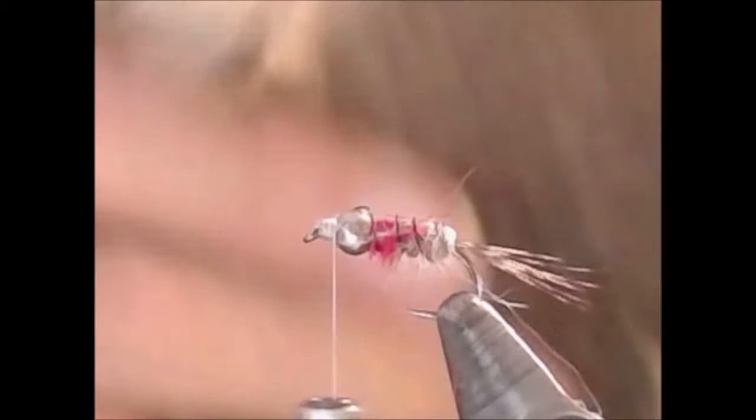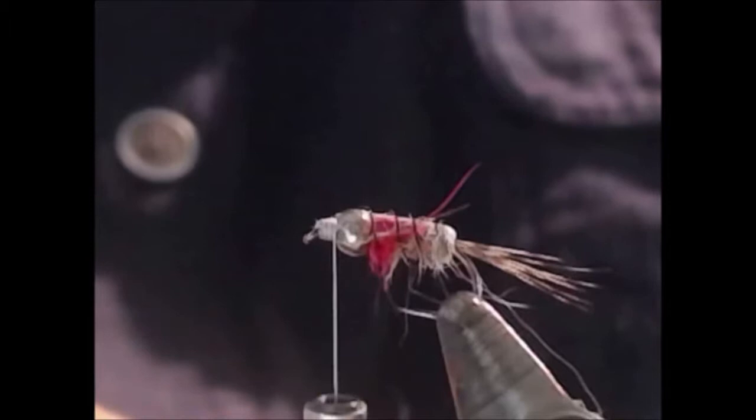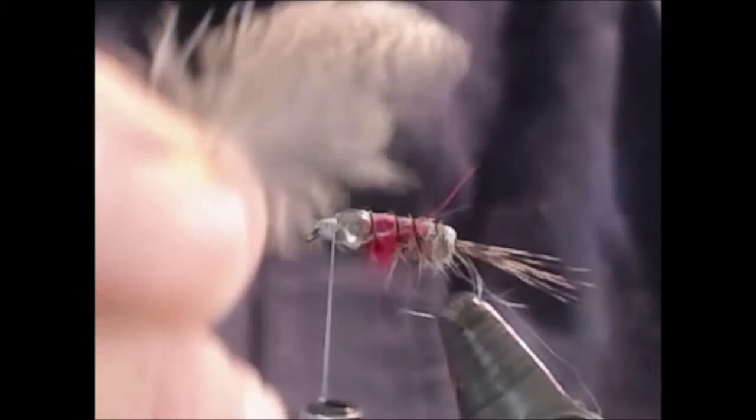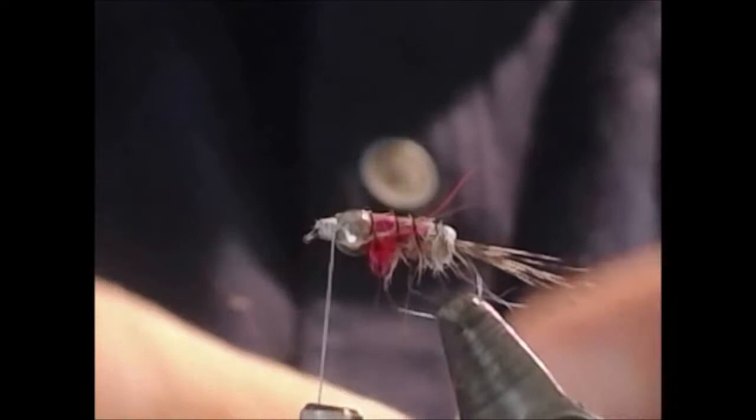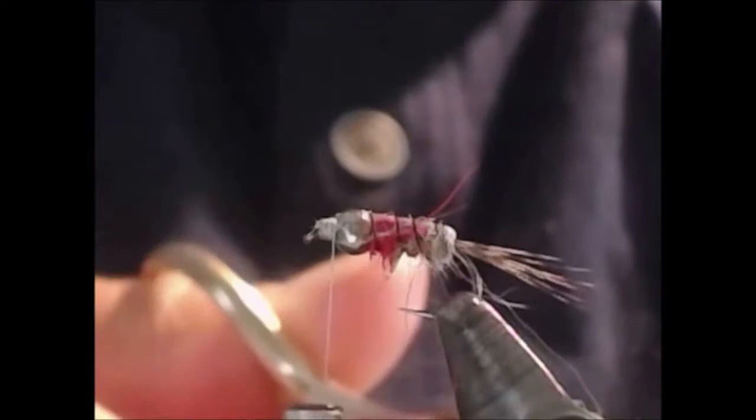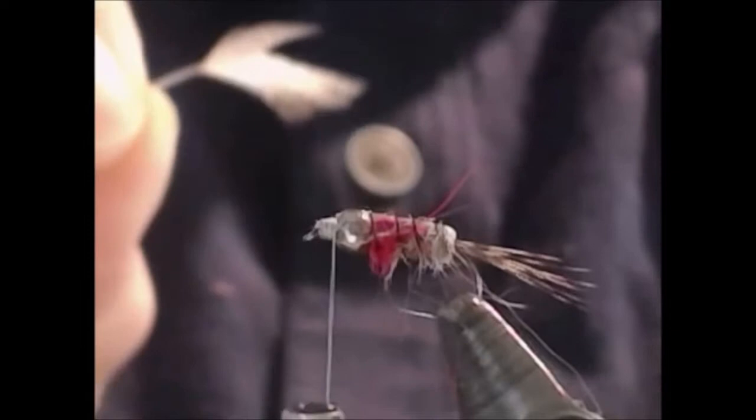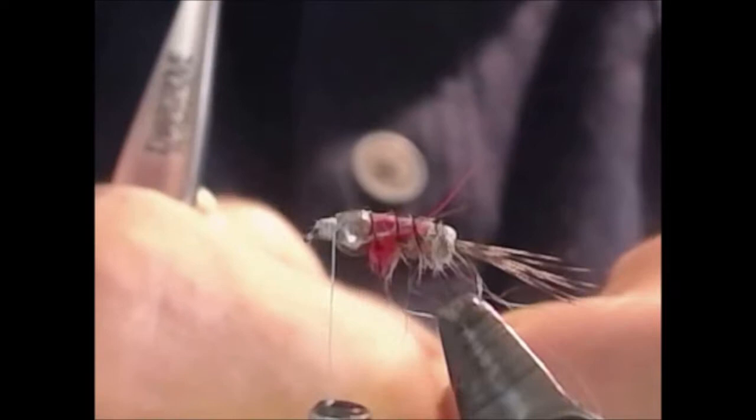We're ready to put on our legs. To do that we're going to use a Hungarian partridge skin. I'm going to select a feather from the skin, peel the fuzz off of the bottom, and then we're going to cut a notch or a V in the feather by kind of removing the stem. That will give us something like this.